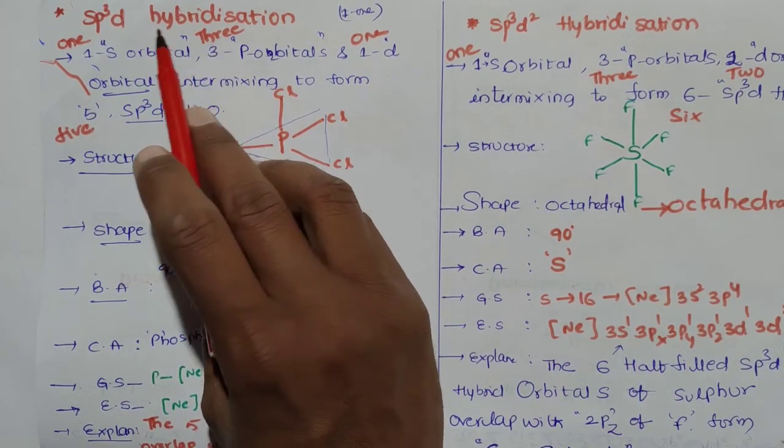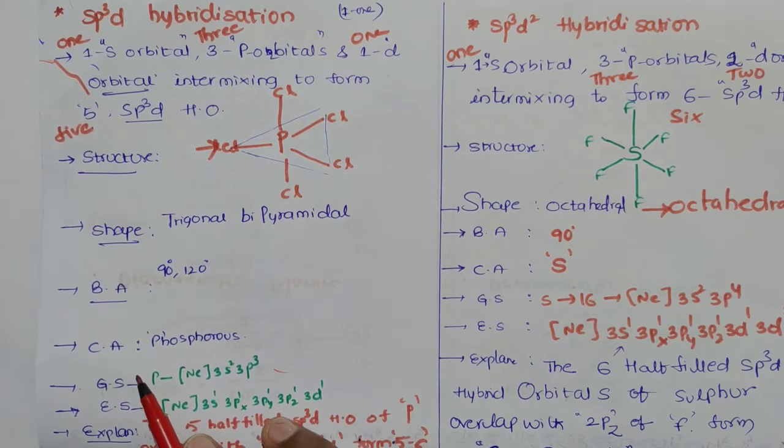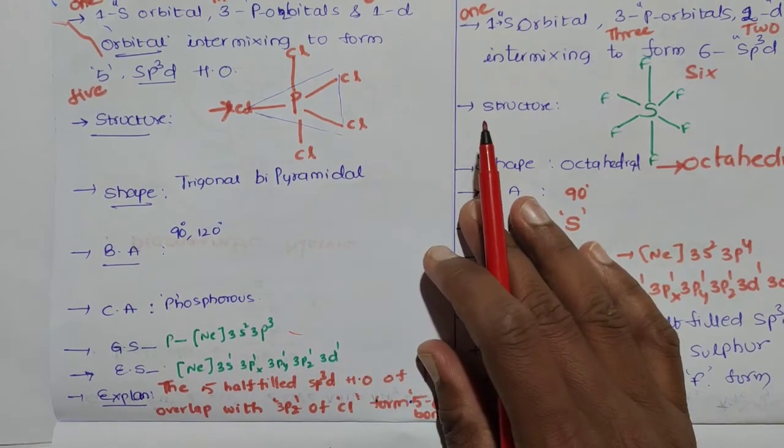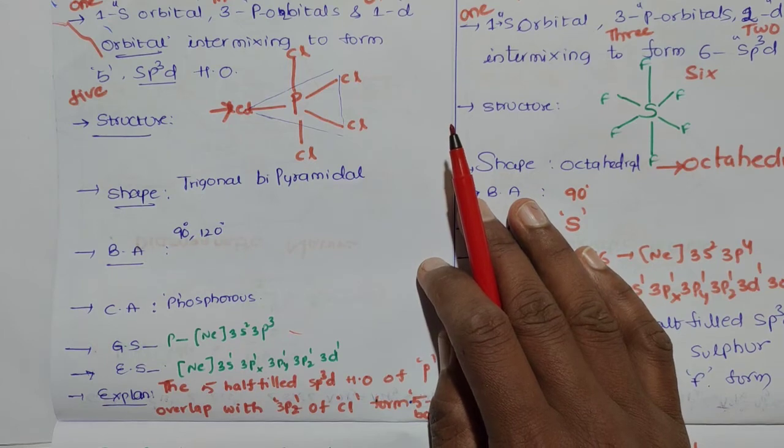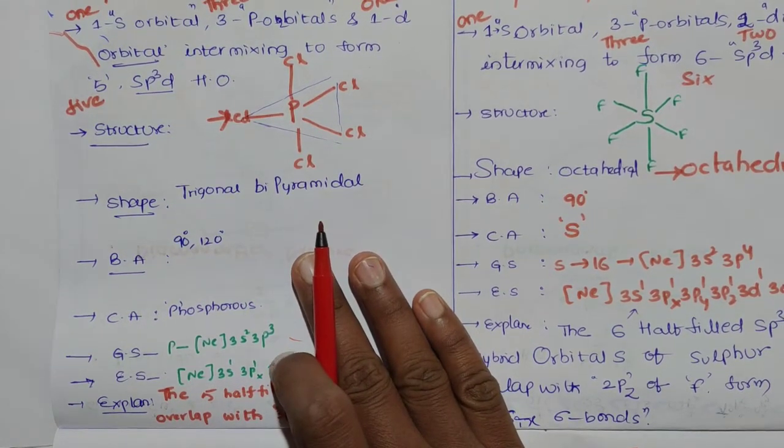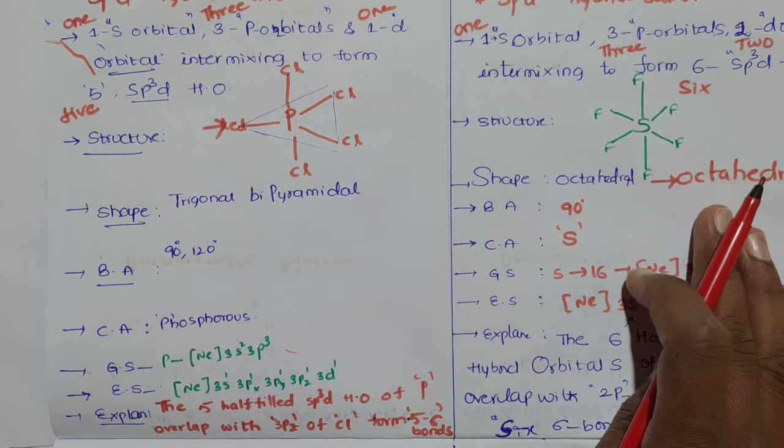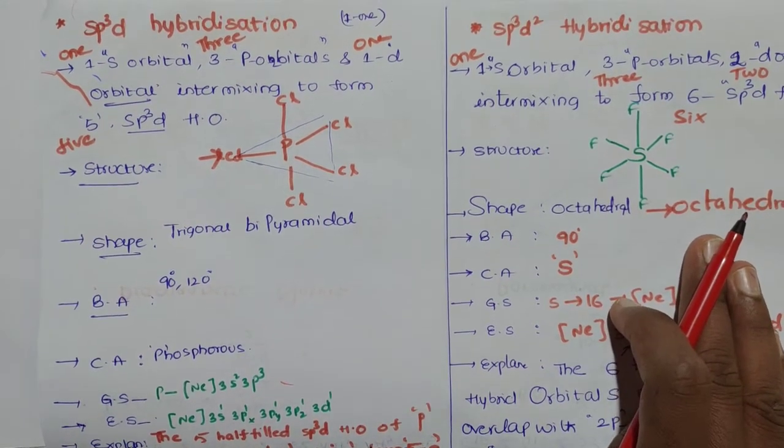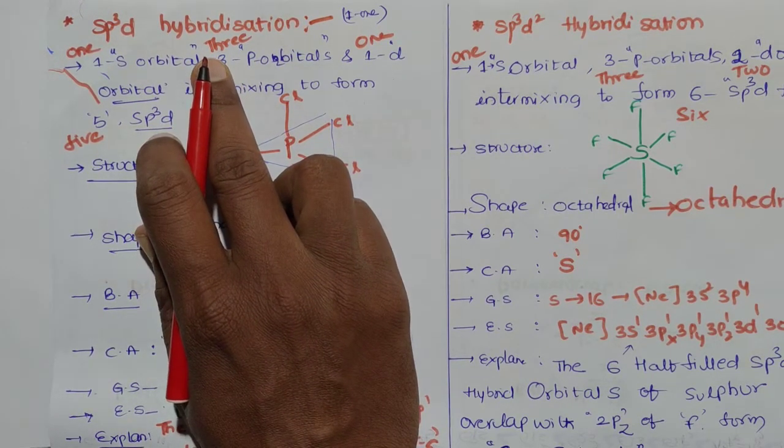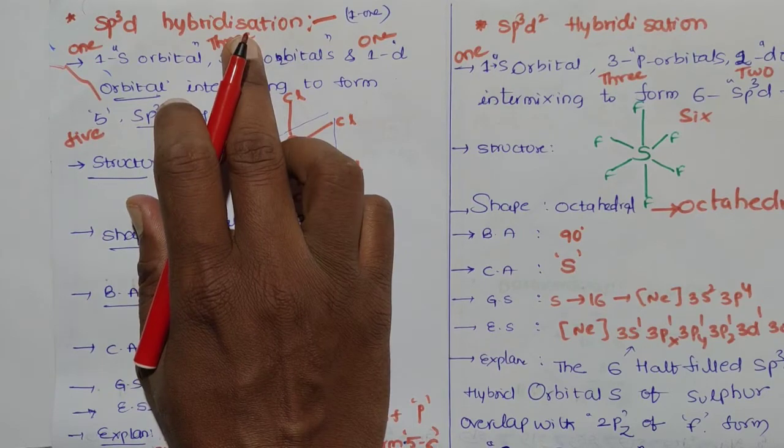First, sp³d hybridization. Take concern of first definition, structure, shape, bond angle, and central atom ground state and excited state and explanation. If you remember these side readings, you directly get four marks without any loss of half mark also.